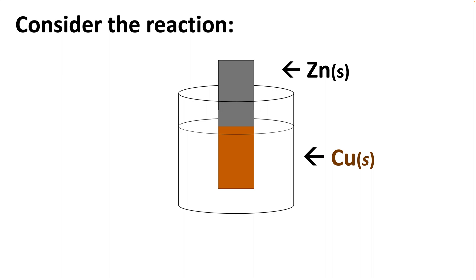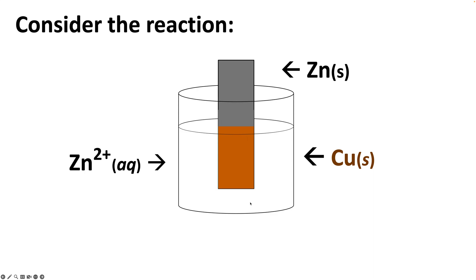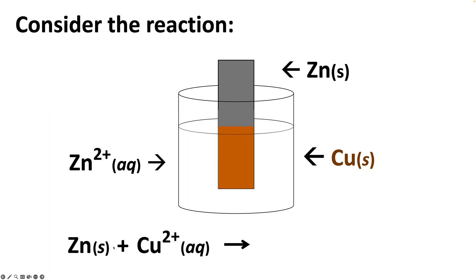What's happening here is copper 2+ ions are forming copper solid, which is depositing on the surface of the zinc metal. We can't see this, but zinc 2+ ions are forming in solution — they're clear and colorless, but they are forming in the solution. So the reaction of zinc solid with copper 2+ ions to make zinc 2+ ions and copper solid occurs.